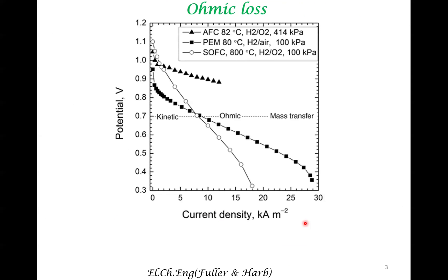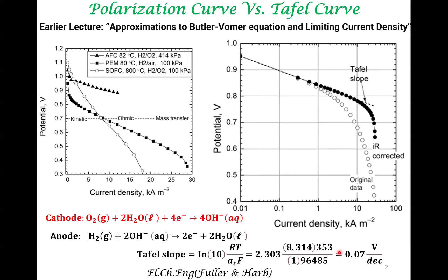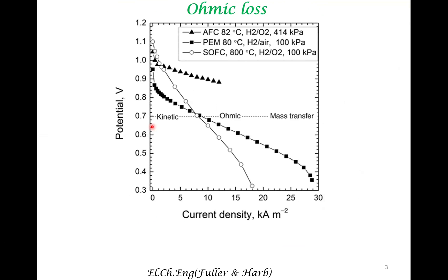With the Tafel slope determined for three different systems — that is, for these three fuel cells — once you obtain the Tafel slope for all three fuel cells, this activation regime can be rationalized.